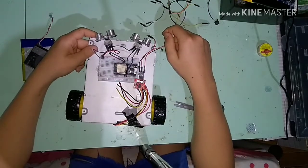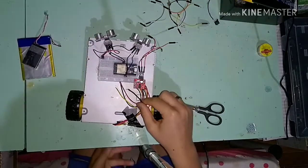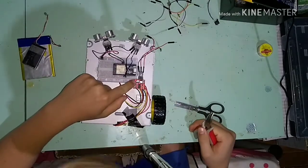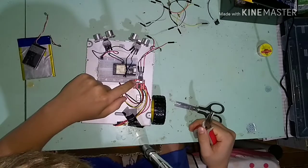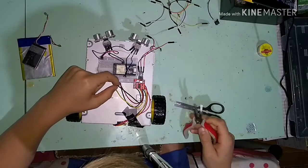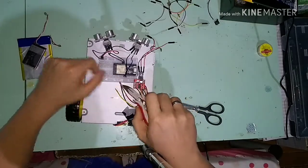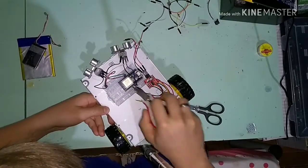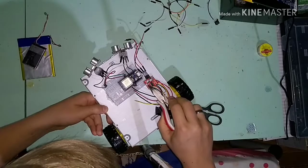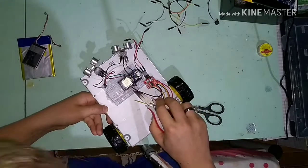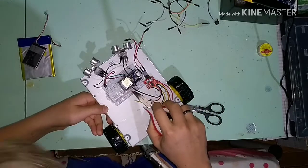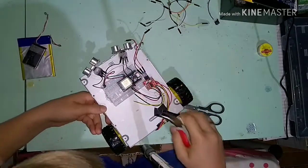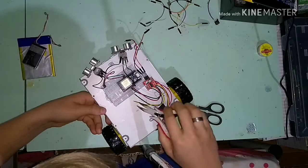Depois liguemos os fios da ponte H, que são o IN3 e o IN4 do motor. Então o IN4 liguemos no pino 13, o IN2 liguemos no pino 25, o IN3 no pino 32 e o IN1 no pino 33.